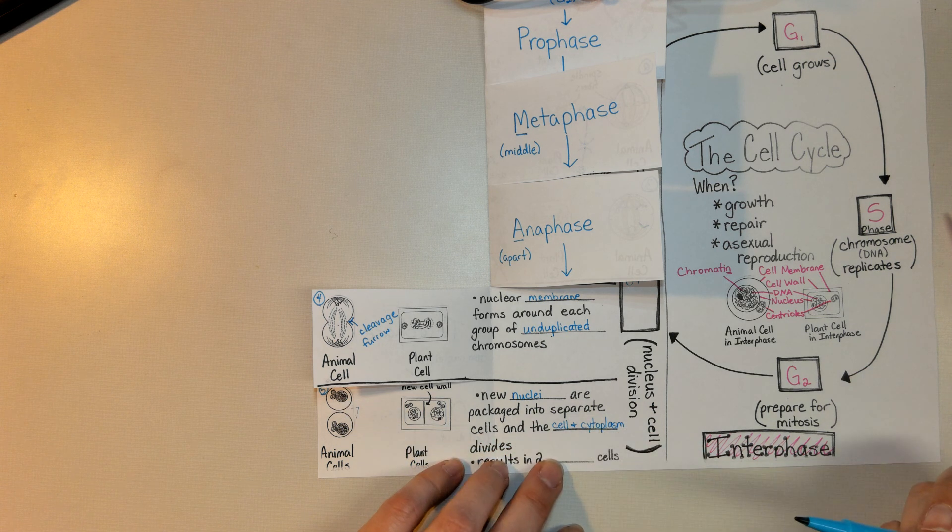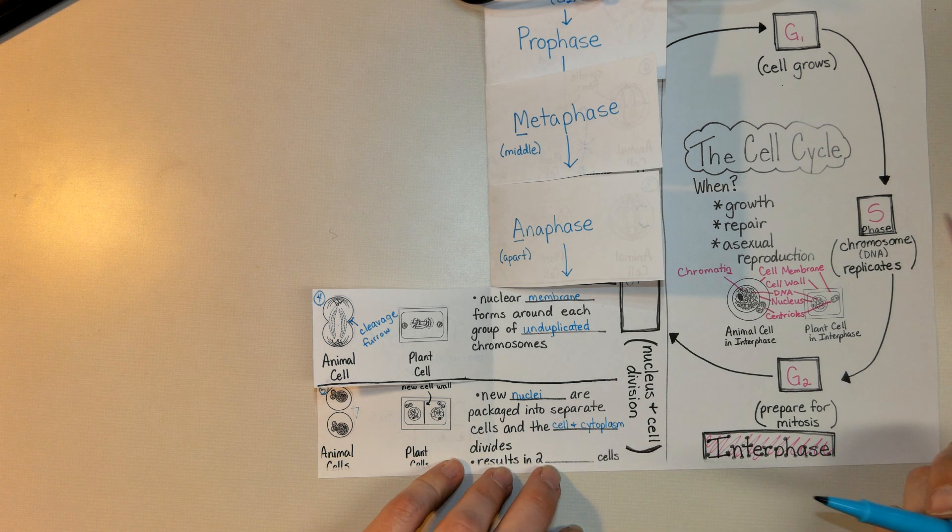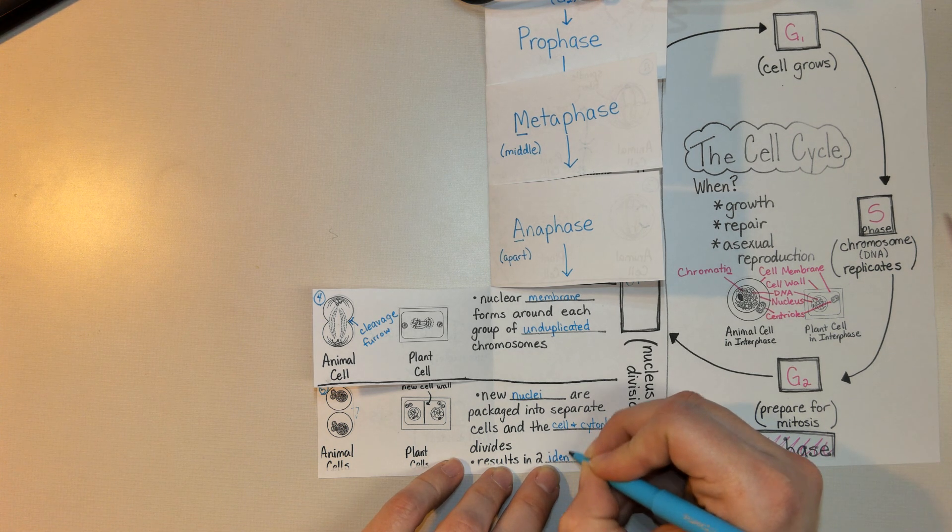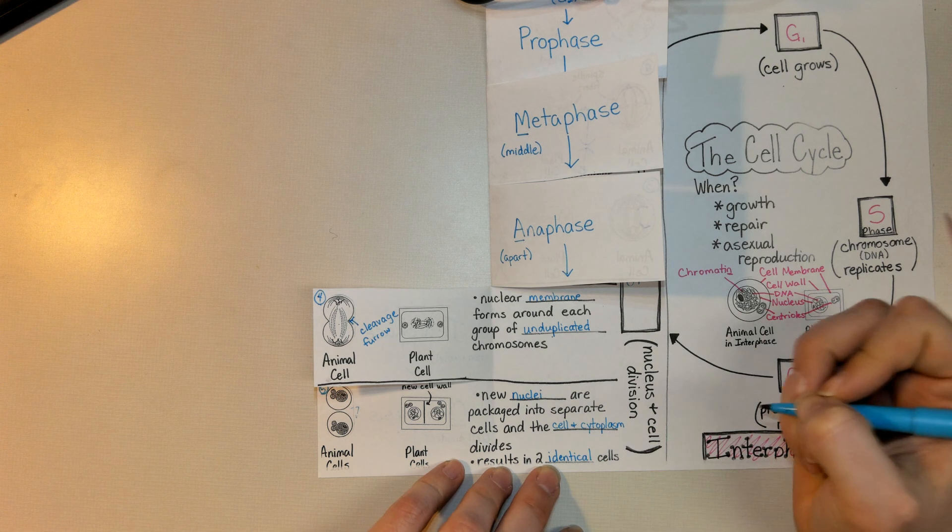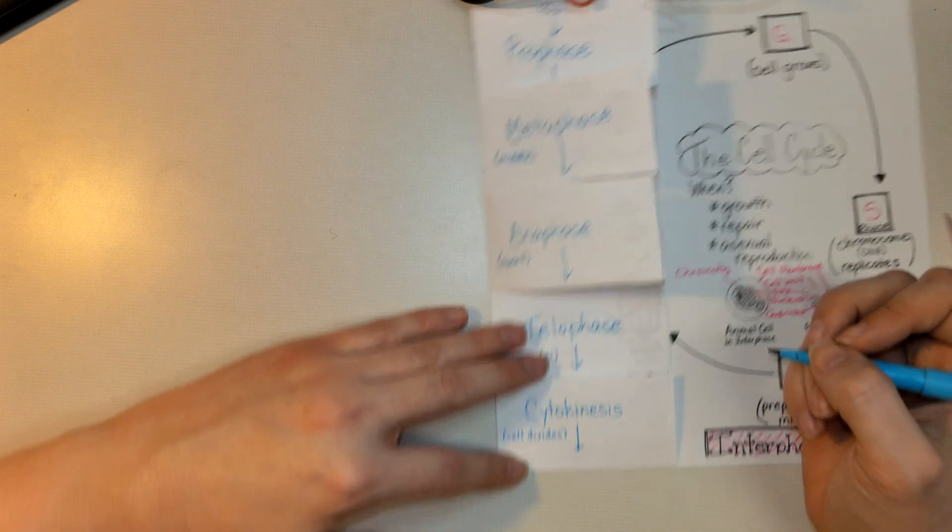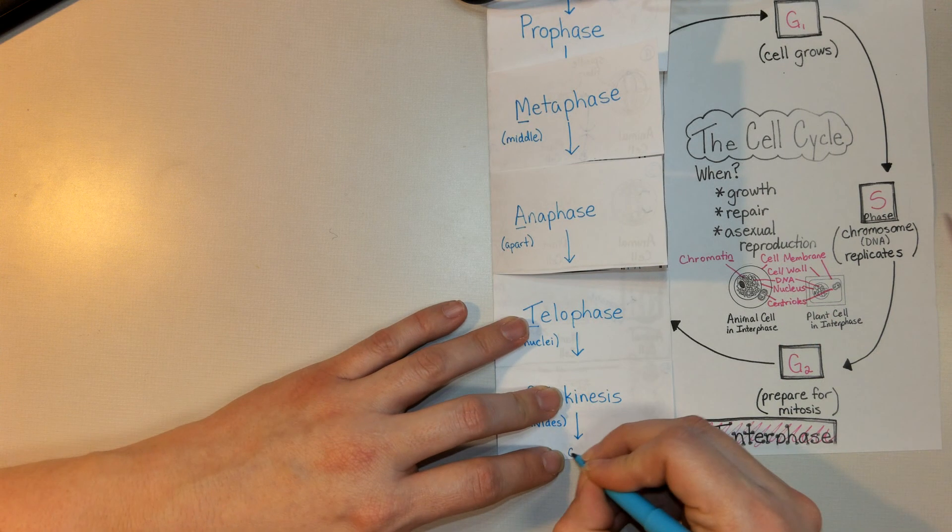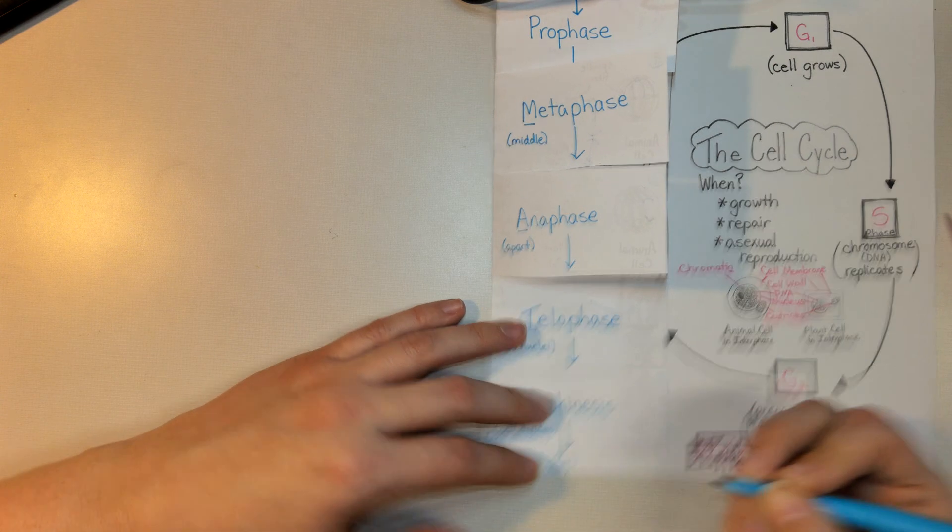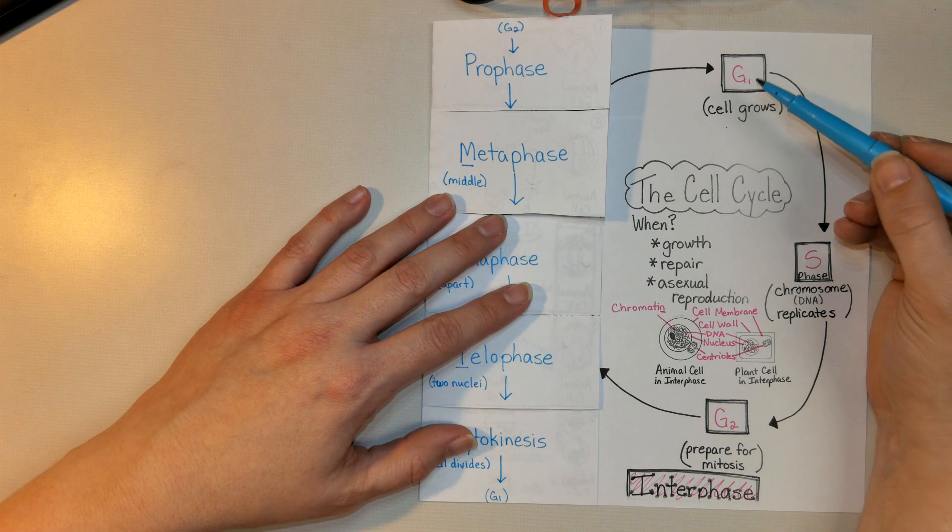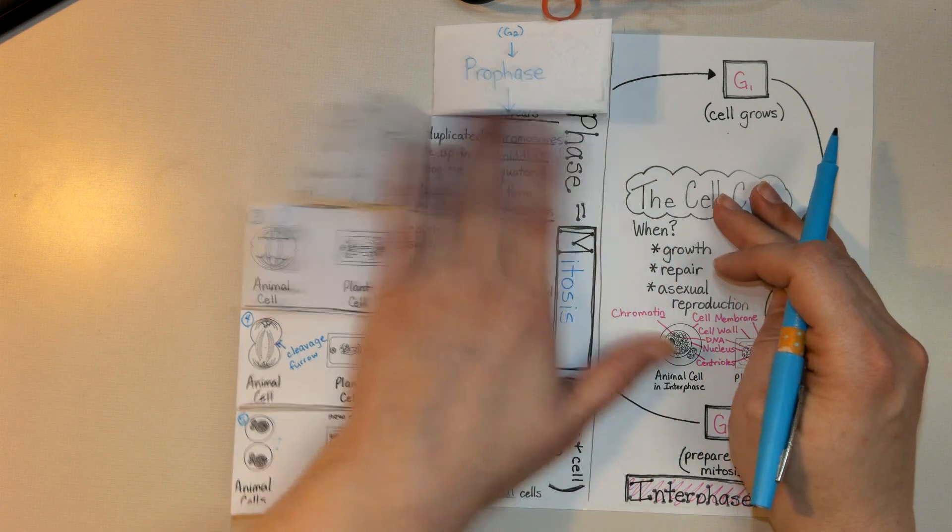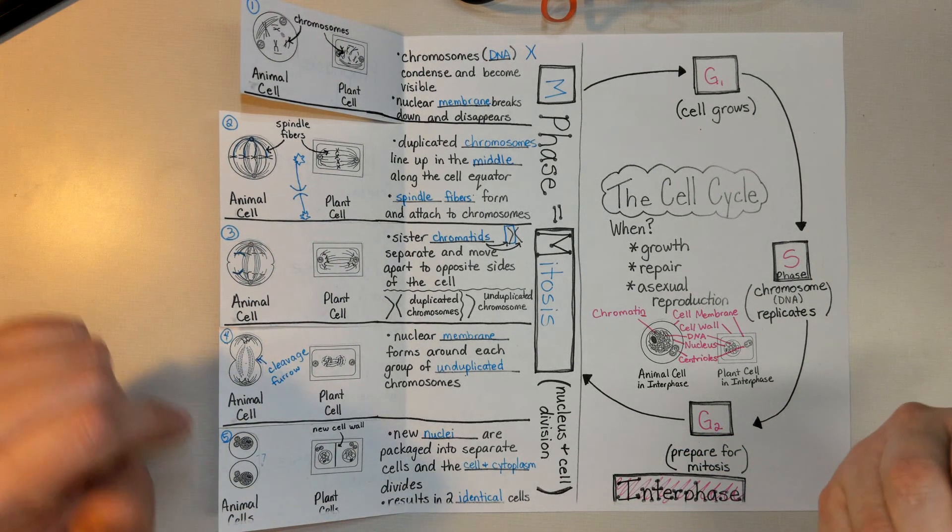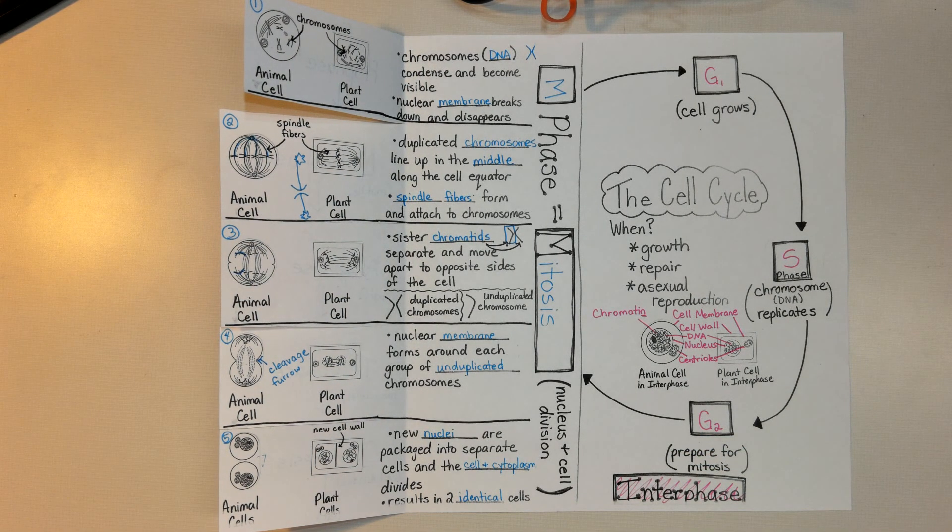Ultimately, by the time mitosis and cytokinesis has finished, we end up with two identical cells. You have cell cloning that happens naturally. Once you have those two cells, those cells are then going to go back into G1 phase. So we test the process of mitosis, as well as a review of the cell cycle. If you have any questions about this information, let me know. Thanks for watching and keep asking questions.